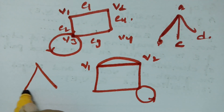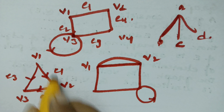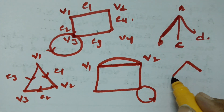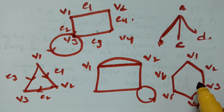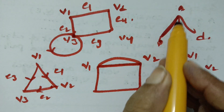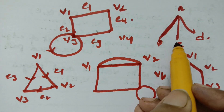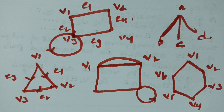A directed graph has a direction assigned to each edge, whereas in an undirected graph there is no direction to any edge. In my next video I will discuss the degree of vertices, in-degree, out-degree, and everything related. Please don't miss the next video. If you liked this video, please share it with your friends and subscribe to this channel. Thank you so much.